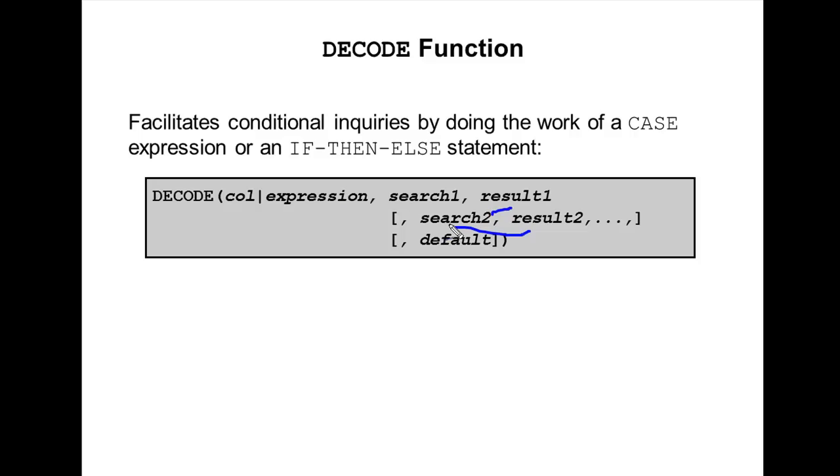The pattern continues: if the expression equals search3, you get result3, and so on. Otherwise, the default value is returned. If no default is specified, it will return NULL.